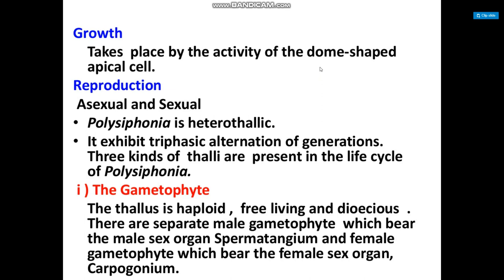The first thallus in the life cycle of Polysiphonia is the gametophyte, which is haploid, free-living, and dioecious. There are separate male gametophytes bearing the male sex organ spermatangium, and female gametophytes bearing the female sex organ carpogonium.